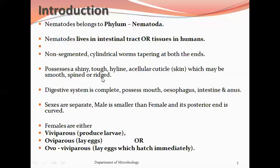Nematodes possess a shiny, tough, acellular cuticle or skin, which may be smooth, spined, or rigid. They have a complete digestive system with mouth, esophagus, intestine, and anus. They also have a simple excretory and nervous system. Male and female reproductive organs are present, and the sexes are separate. The male is smaller than the female and is posteriorly curved. Females are either viviparous, producing larvae, or oviparous, laying eggs that hatch out immediately.